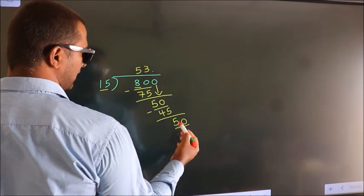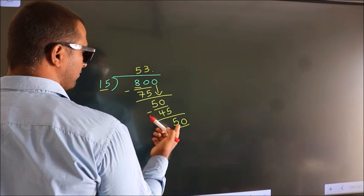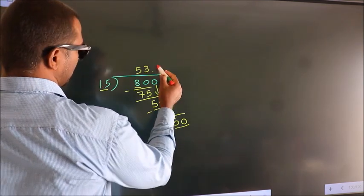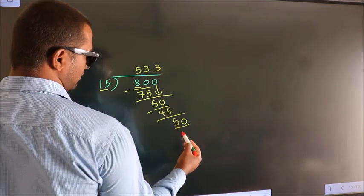So 50. A number close to 50 in 15 table is 15 threes, 45.